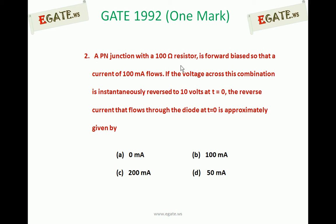A PN junction with a 100 ohm resistor is forward biased so that a current of 100 mA flows. If the voltage across this combination is instantaneously reversed to 10V at T equal to 0, the reverse current flowing through the diode at T equal to 0 is approximately: (a) 0 mA, (b) 100 mA, (c) 200 mA, (d) 50 mA.